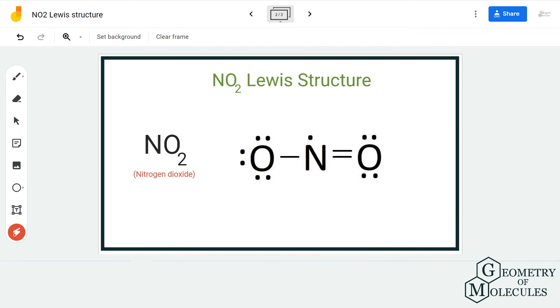This is how you can arrange the electrons and bonds, and hence this is the Lewis structure of NO₂ in which the nitrogen atom forms a double bond with one oxygen and a single bond with another oxygen. This is the Lewis structure of NO₂.